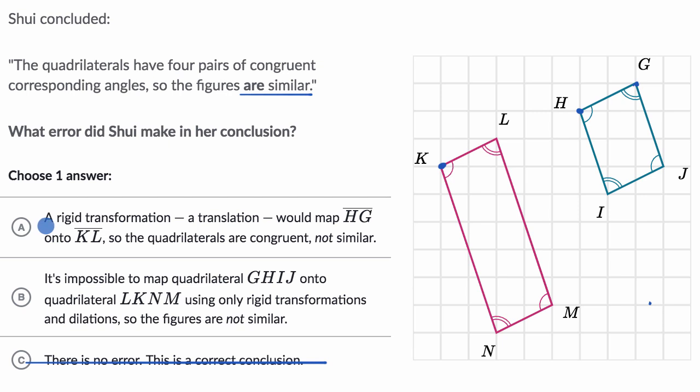So let's see, is the error that a rigid transformation, a translation would map HG onto KL? Yep, we just talked about that. HG can be mapped onto KL. So the quadrilaterals are congruent, not similar.